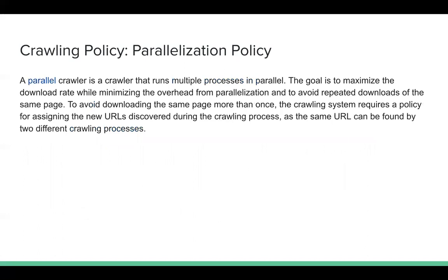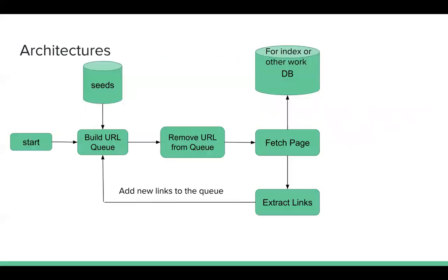The last policy is the parallelization policy. It tells us we should coordinate all our crawler instances well — we should not allow two crawler instances to fetch the same URL. This is our basic architecture.